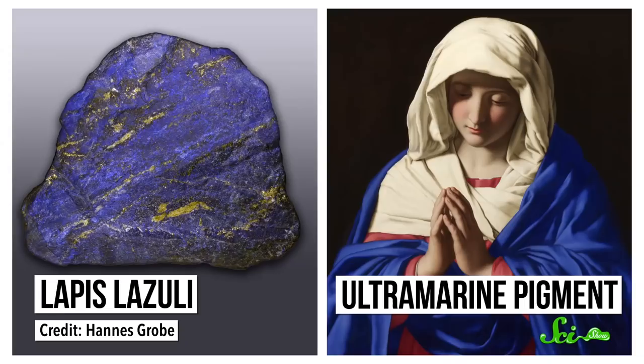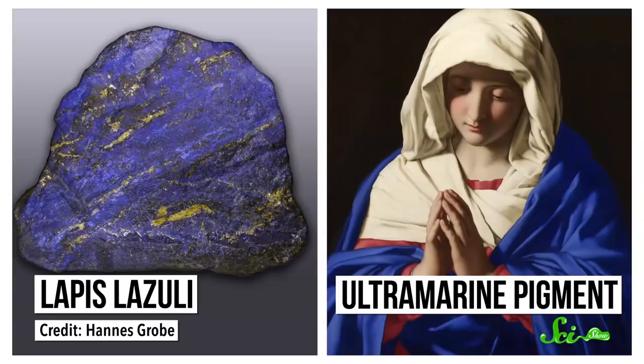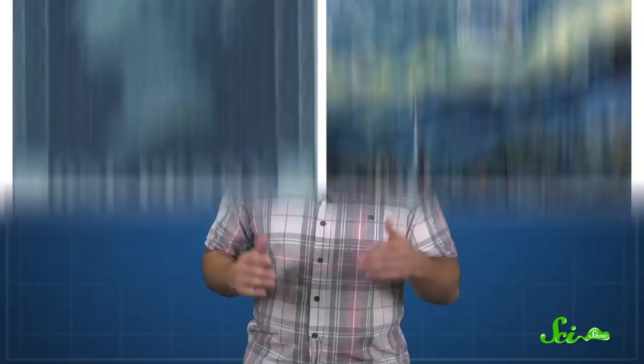Diesbach's mistake was serendipitous, because at the time, a lot of blue pigments like indigo faded. Or they were super expensive, like ultramarine, which was made by grinding up semi-precious stones shipped from Afghanistan. Prussian blue was cheap and durable, so all of Europe wanted it for clothes, stamps, and in their fine art.